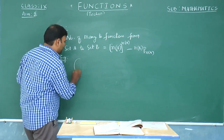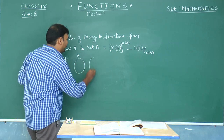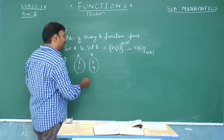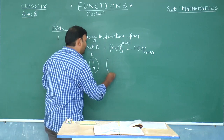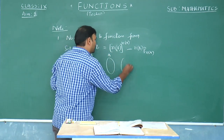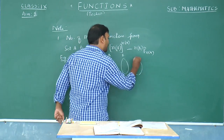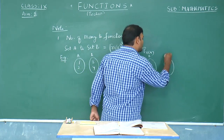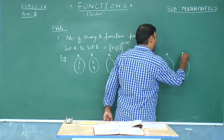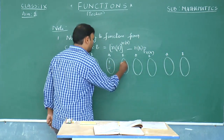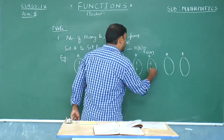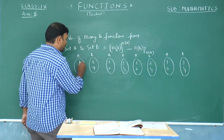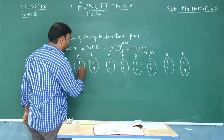In the previous example, sets A and B each contain two elements. So the total number of functions possible is four. As drawn before, I am going to draw those four functions again — with two elements in each set, there are four functions possible.